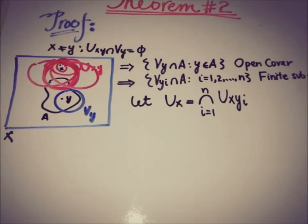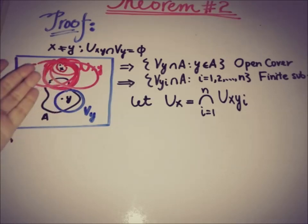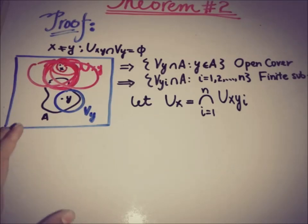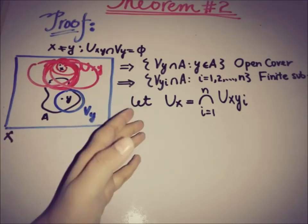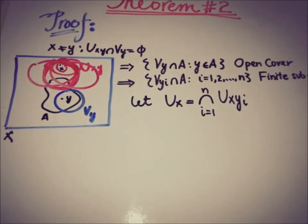We define U_x to be the intersection of all such open sets containing x, so U_x = ∩ U_{x,y_i}. We now have an open set U_x containing x. The only thing left to check is whether U_x ∩ A is empty or not.